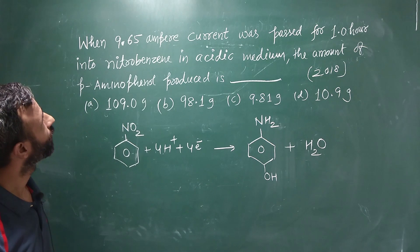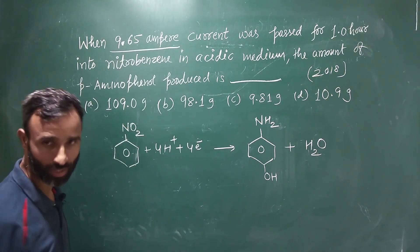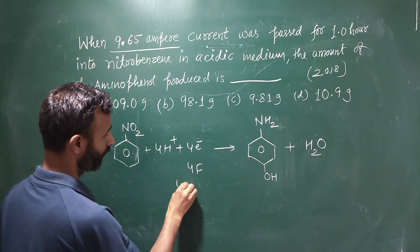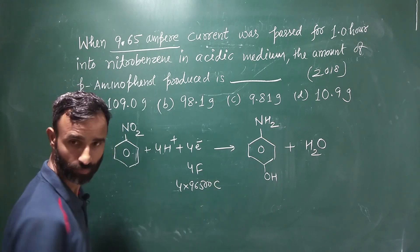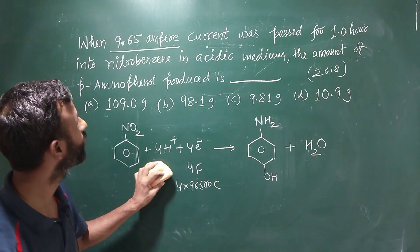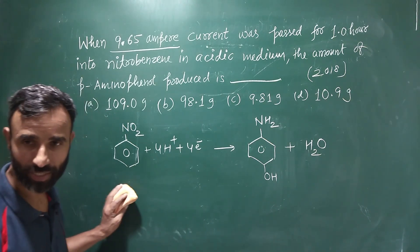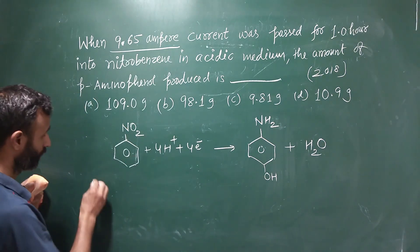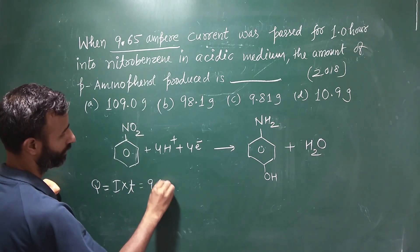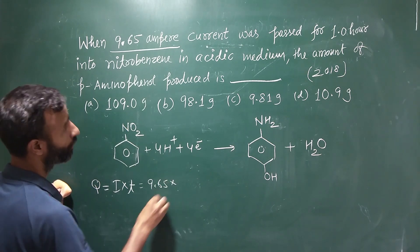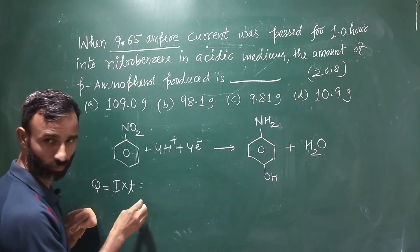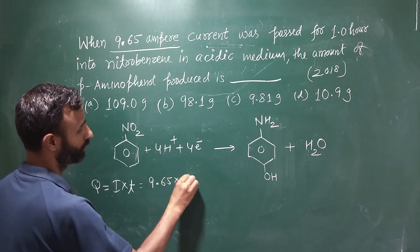We have 9.65 ampere current passed. So, quantity of charge Q = i × t. i is 9.65 ampere, and time is 1 hour which is 60 × 60 = 3600 seconds. So Q = 9.65 × 3600 coulombs.